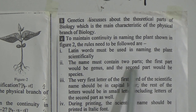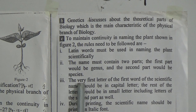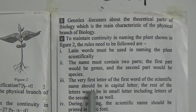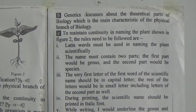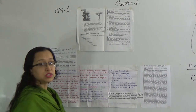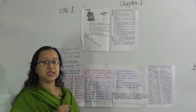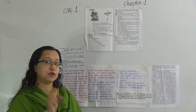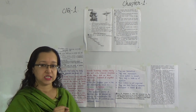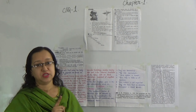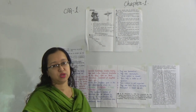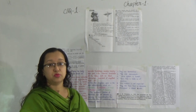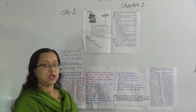Number three: the very first letter of the first word of the scientific name should be in capital letter; the rest of the letters would be in small letters, including the letters of the second part as well. So when you write the scientific name of anything, you must start with the genus — with its first letter capitalized — then the species name in all small letters, and you must underline it when writing the scientific name of any animal or plant.